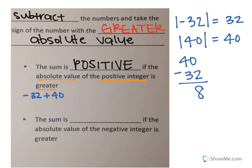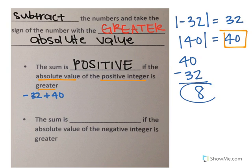The number with the larger absolute value is 40, and 40 was positive. When we look at our problem, it was positive 40, which means that our sum is going to be positive. So this 8 is going to be positive. That means negative 32 plus 40 equals positive 8.